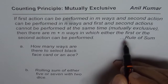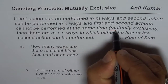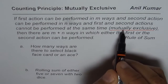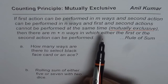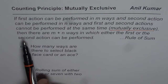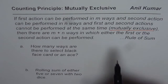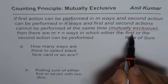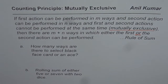It is important to note that these two actions are mutually exclusive, meaning they cannot be performed at the same time. In that case, there are M plus N ways in which either the first or the second action can be performed. This 'or' is a very important keyword when you can apply the rule of sum.